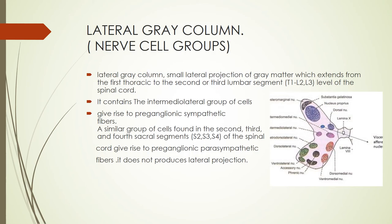The lateral gray column or lateral horn is a small lateral projection of gray matter between the ventral and dorsal horns. It extends from the first thoracic to the second or third lumbar segment of the spinal cord. It contains the intermediolateral group and intermediomedial group, of which the intermediolateral group is important as it gives rise to preganglionic sympathetic fibers. A similar group of cells is found in the second, third, and fourth sacral segments where the intermediolateral group gives rise to preganglionic parasympathetic fibers, but without producing a lateral horn projection.